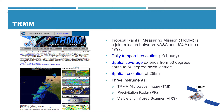They provide data on a daily temporal resolution, that means three-hourly. It also has global coverage, meaning it extends from 50 degrees south to 50 degrees north latitude, and it has a spatial resolution of 25 kilometers. That means a single TRMM pixel is 25 kilometers by 25 kilometers.